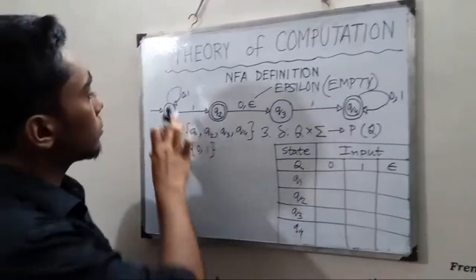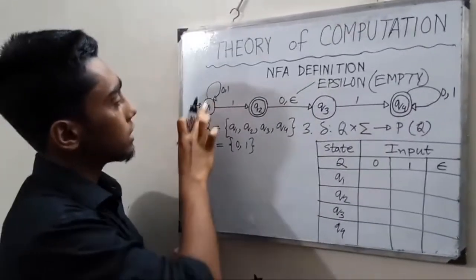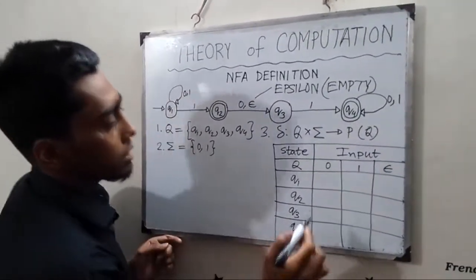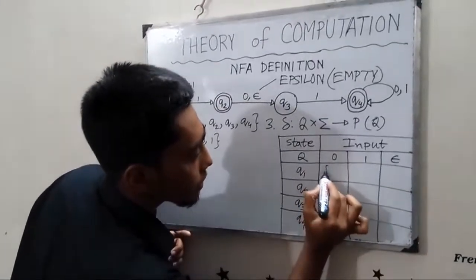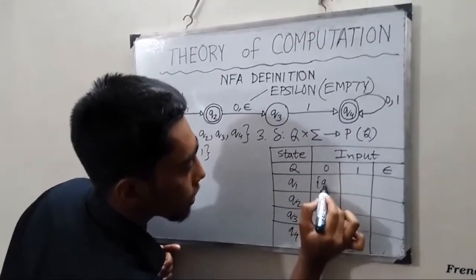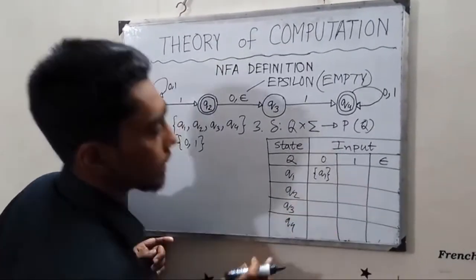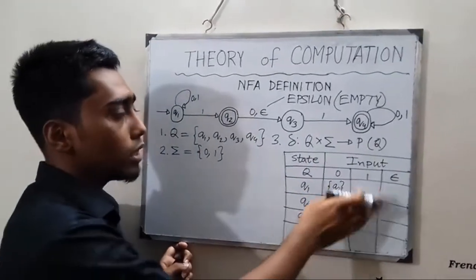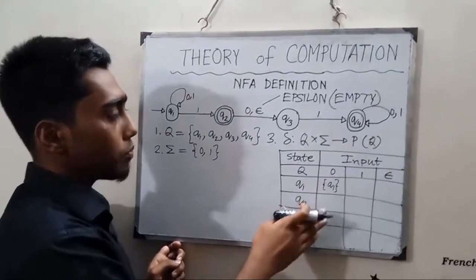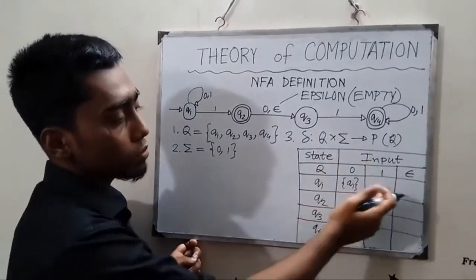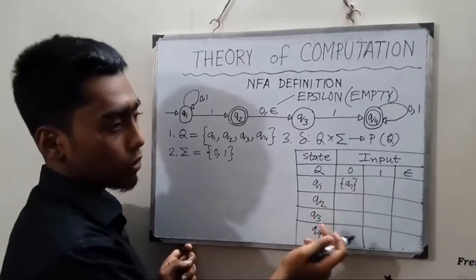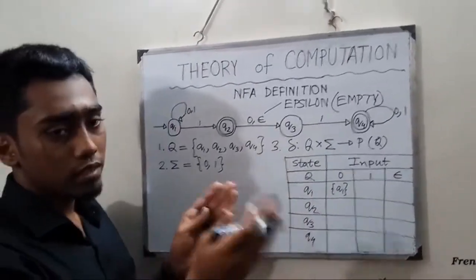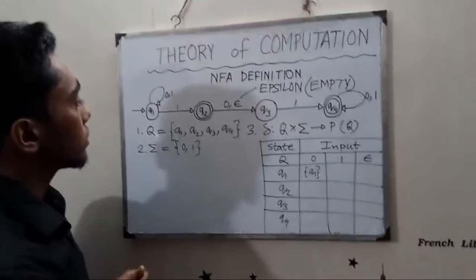If from Q1 we read 0, the transition goes to Q1. In this case, if we had a DFA we would have a single state, but here we take the set of states as input for the transition.